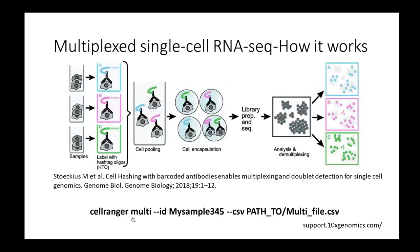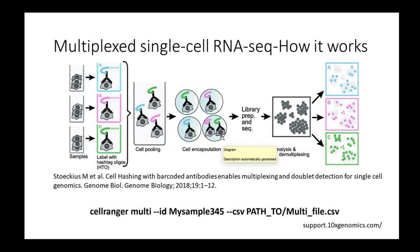Each sample has a CMO that tags it, and then it's mixed in a pool but retains the tag so we know which sample it comes from. With encapsulation you should have one cell per encapsulation. Sometimes you have doublets — that's where the method performs well to remove multiplets, because you would see two CMOs in one encapsulation and know it's a multiplet. Since multiplets likely come from different samples, you can remove them prior to analysis.